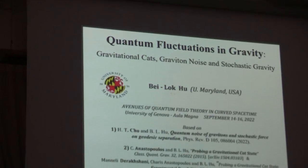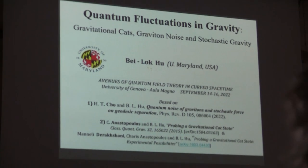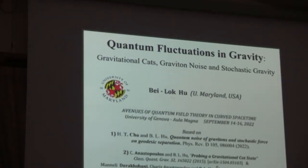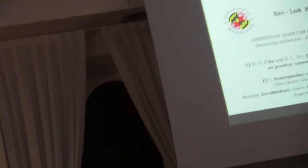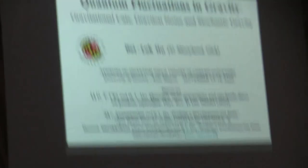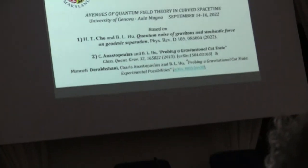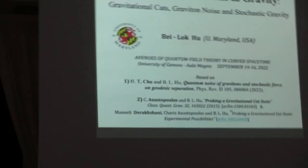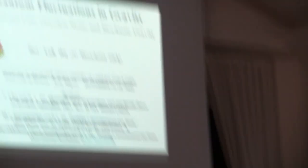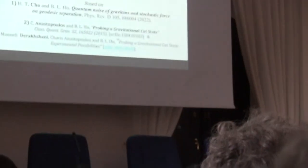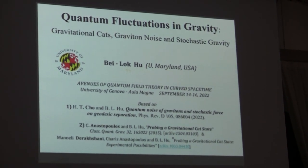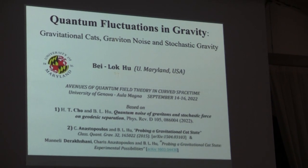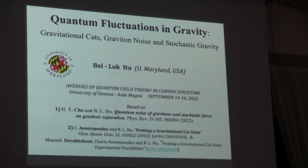It actually covers three topics. One is gravitational decoherence. If there's gravitational cat state, this is easier. And then the third one, more recently in the last two years, gravitational graviton noise. And all these actually have experimental implications. In fact, there are experiments proposed for these three aspects.